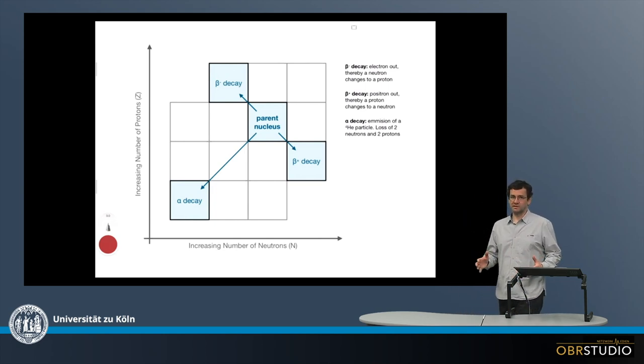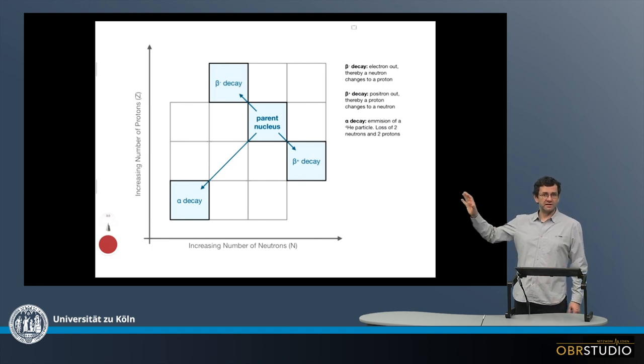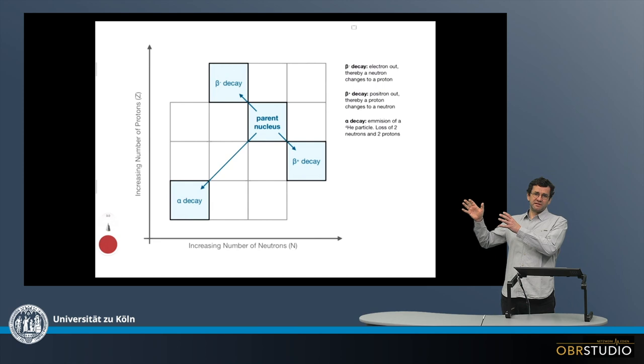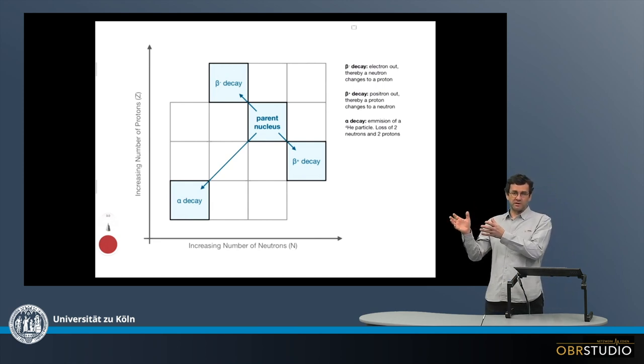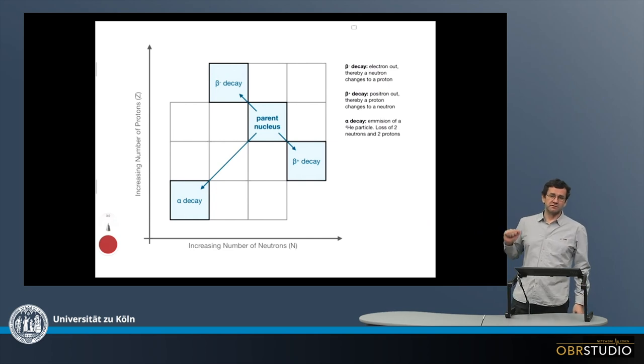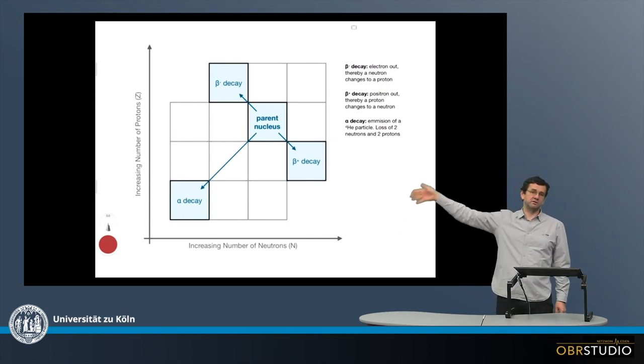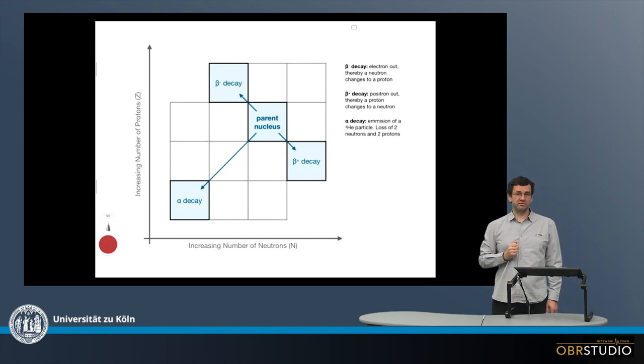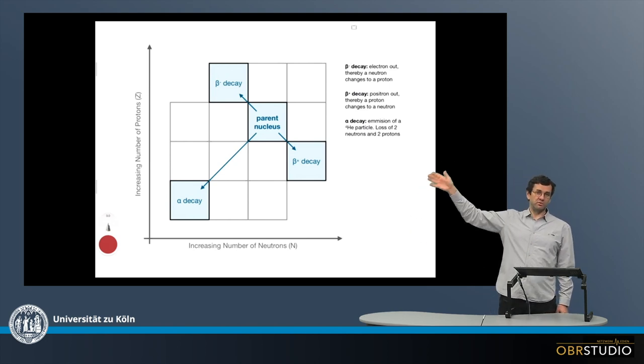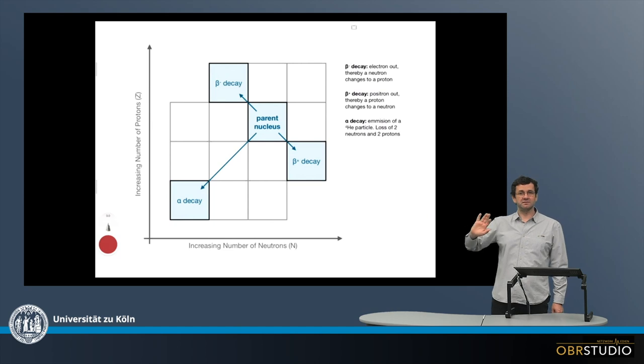There are a couple of different modes elements decay, but there are three most important, and these are displayed here. What you see here is basically a small part of the chart of nuclides. On the x-axis to the right here is the increasing number of neutrons, and on the y-axis there is the increasing number of protons. So along the y-axis are the various elements, along the x-axis are the various isotopes.